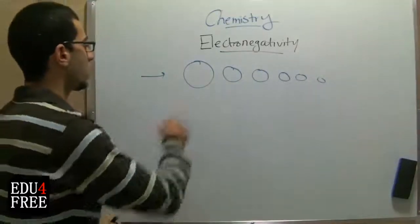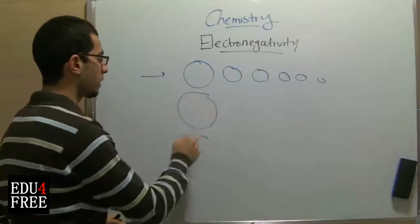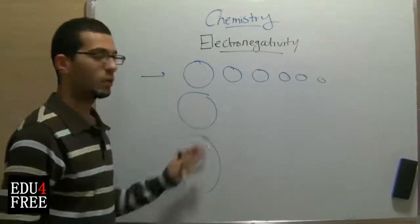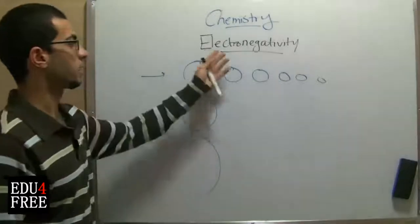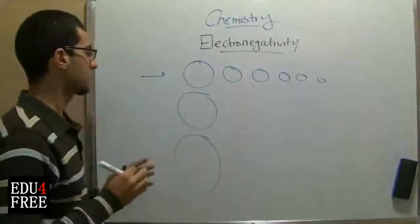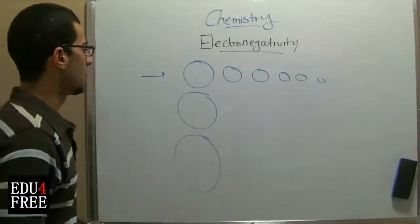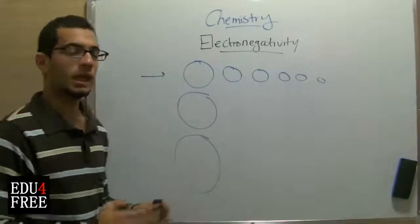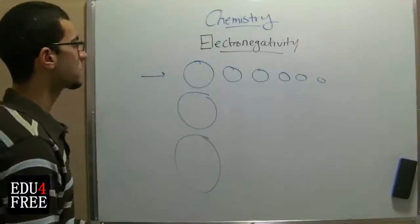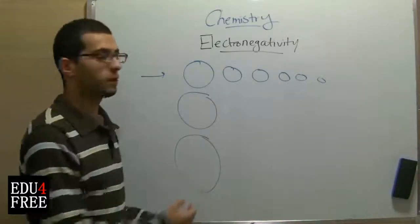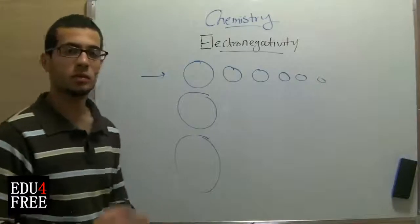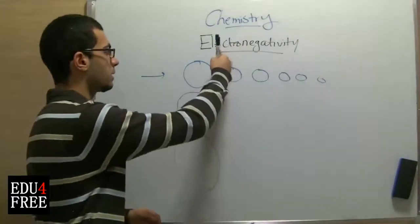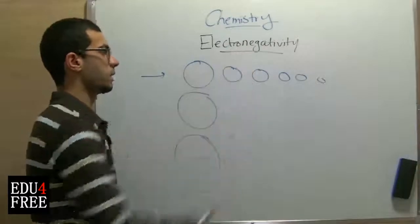As we go downwards in vertical groups, by increasing the atomic radius, the electronegativity will decrease due to increasing the distance between the nucleus and the outermost energy levels. So the attractive forces of the nucleus will decrease and this will decrease the electronegativity.